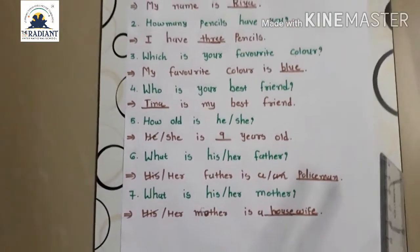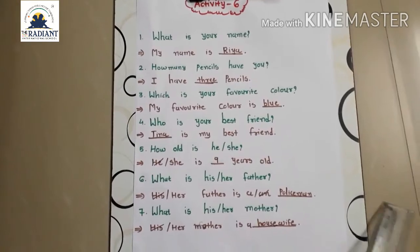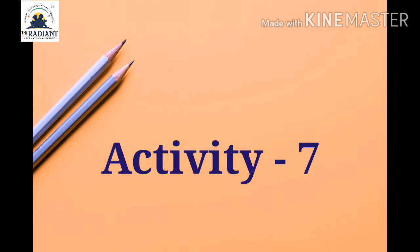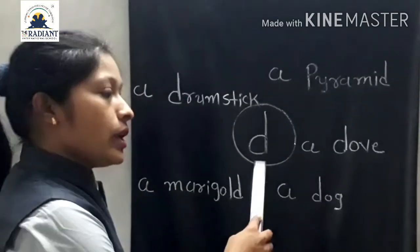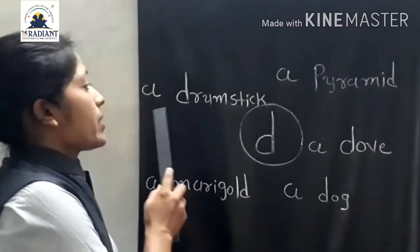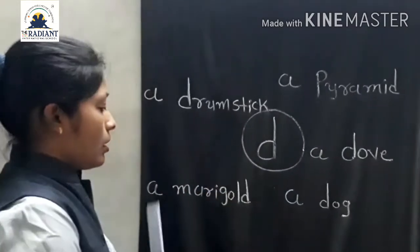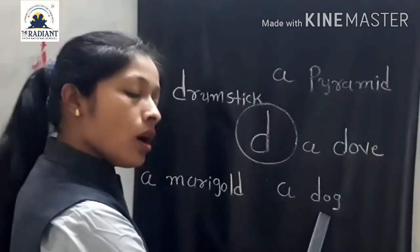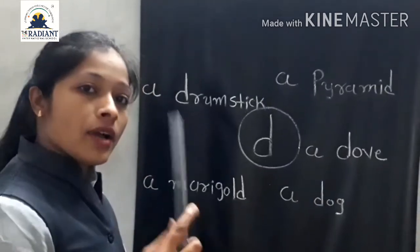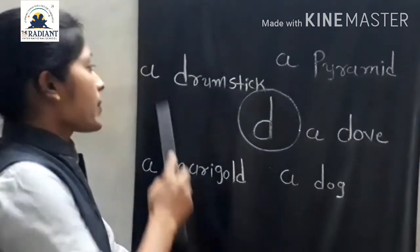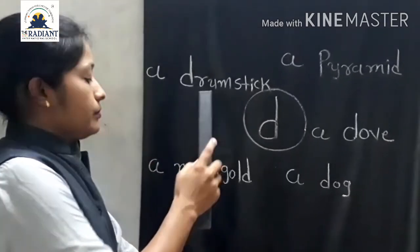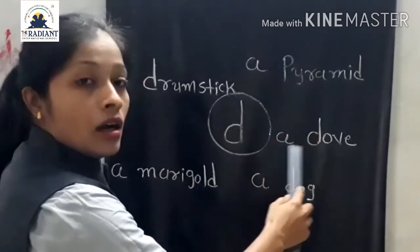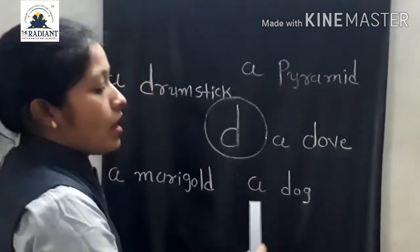Ta tamarun yaan aapnei joi question naa answer lakwaanahe reishi. Let's see activity 7. Aapnei saamjhi suti. First, we read the words: a drumstick, a marigold, a pyramid, a dove, a dog. Friends, a way of words — samarun yaan aapnei joi repeat karwana reishi. A drumstick, a marigold, a pyramid, a dove, a dog.